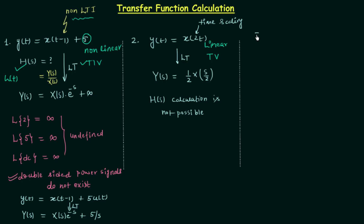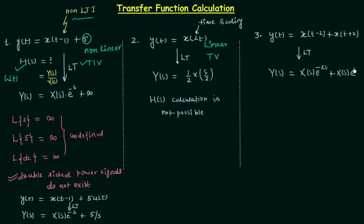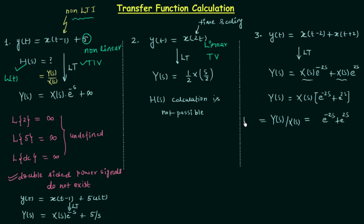Now we will move to problem number 3. In this problem, y(t) = x(t−2) + x(t+2). We already know the Laplace transforms of x(t−2) and x(t+2). Taking the Laplace transform gives Y(s) = X(s)·e^(−2s) + X(s)·e^(+2s). Taking X(s) common from the two terms gives Y(s) = X(s)·[e^(−2s) + e^(2s)]. Dividing both sides by X(s) gives Y(s)/X(s) = e^(−2s) + e^(2s).